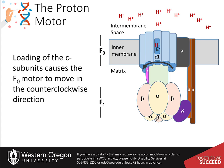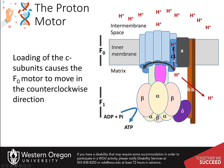The C subunits continue to rotate until they reach the other side of the A subunit. Note that rotation of the C subunits also moves the gamma axle subunit. Once the loaded C subunits shift away from the A subunit, the half channel closes, locking the proton inside the channel until it reaches the other side of the A subunit. The C subunit then changes conformation to open up a half channel to the matrix side, causing the proton to flow out of the channel and into the matrix.